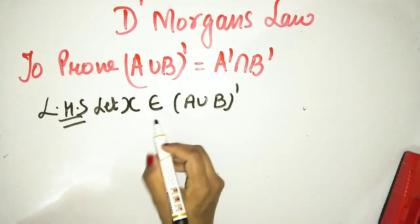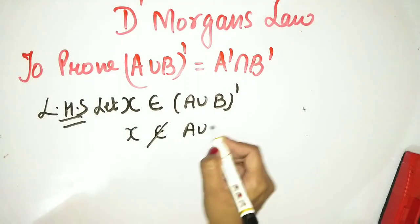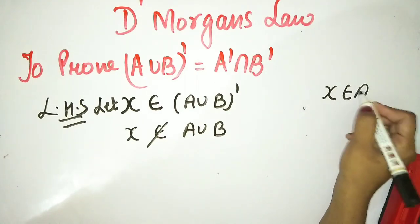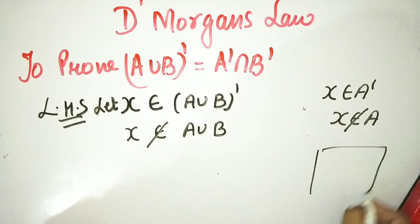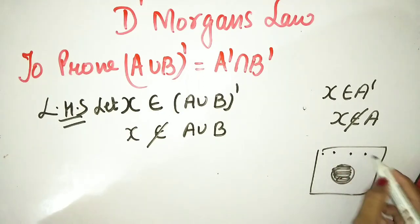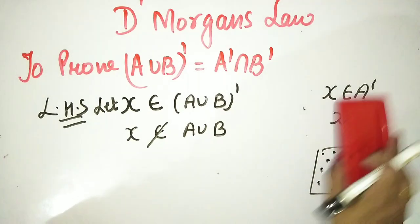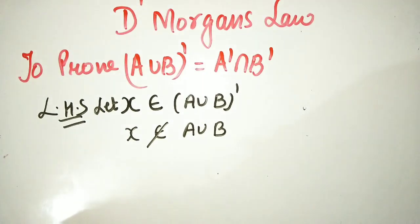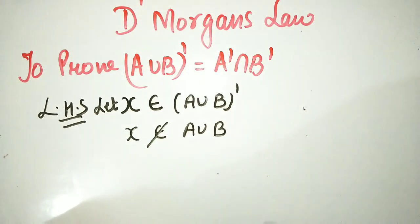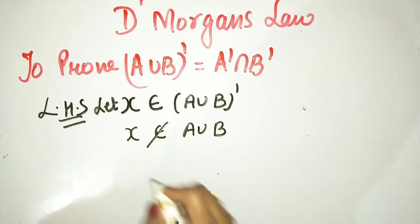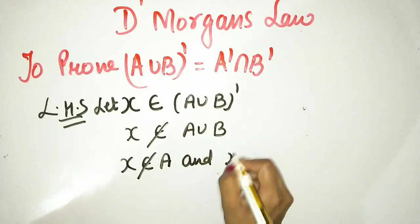Now apply the complement definition here. If x belongs to a complement, then x does not belong to that set. So if x belongs to (A union B) complement, it means x does not belong to A union B. And if x does not belong to A union B, it means x does not belong to A and x does not belong to B.